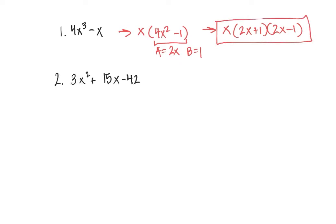The second one is a little bit different. There are three terms instead of two terms, so first we find the greatest common factor, which would be 3. So I'm going to factor out the 3, and I'm left with x squared plus 5x, and then 42 divided by 3 would be 14. So now we just need to find two things that multiply to get to 14 and add to get to 5. That would be 7 and 2, and since the bigger number needs to be positive, it will be x plus 7, x minus 2.